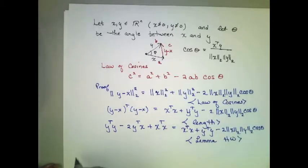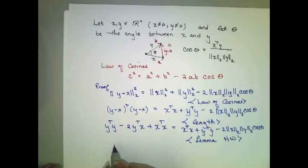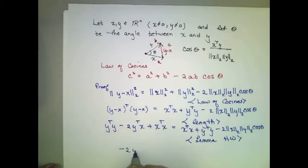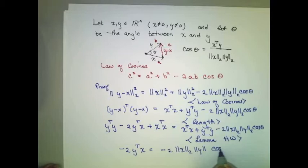And I'm going to ask you to make sure that this is true. Now, by algebra, I can actually simplify this equation. I can subtract y transpose y and x transpose x from each side. Which yields minus 2 times y transpose x is equal to minus 2 times the length of x times the length of y times the cosine of theta. That's just algebra.